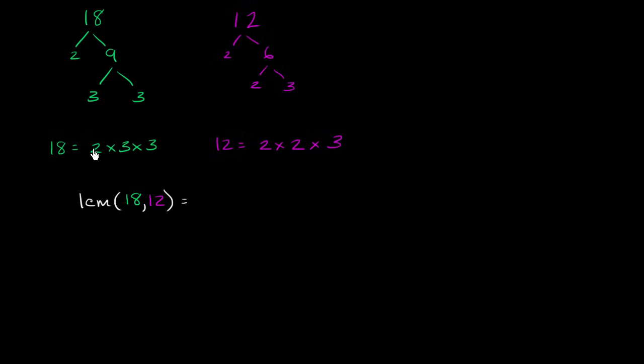So let's think about it. Well, it needs to have at least one 2, a 3, and a 3 in order to be divisible by 18. So let's write that down. So we have to have a 2 times 3 times 3. This makes it divisible by 18. If you multiply this out, you actually get 18. And now let's look at the 12. This part right over here is the part that makes up 18, makes it divisible by 18.